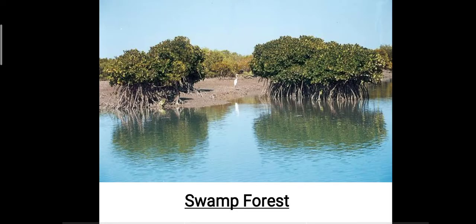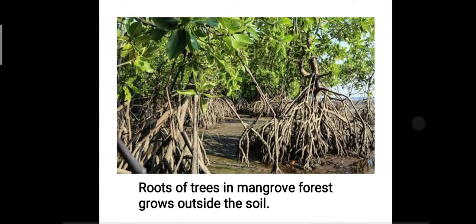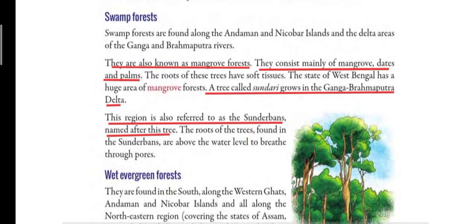This is how the swamp forest looks like. Swamp forests are found in marshy areas — marshy means dal dal. They are found in two places in India: first, the Andaman and Nicobar Islands, and second, the delta areas of the Ganga and Brahmaputra rivers.